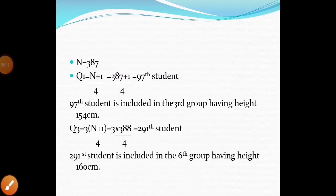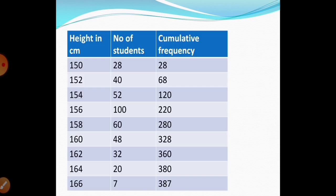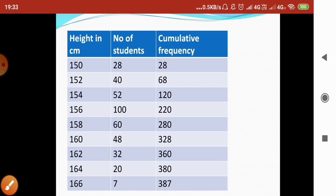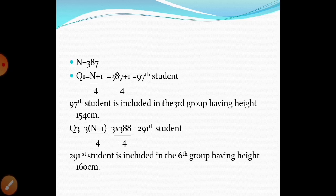Now, Q1 is calculated using the formula (n+1) divided by 4. Here n is 387, so (387+1)/4 gives the 97th student. Looking at the cumulative frequencies, the 97th student falls under the category with height 154 cm. So Q1 is 154 cm.